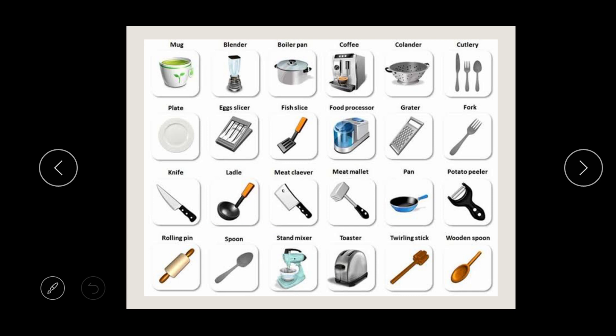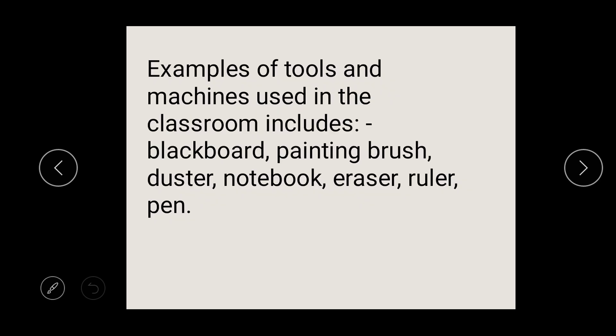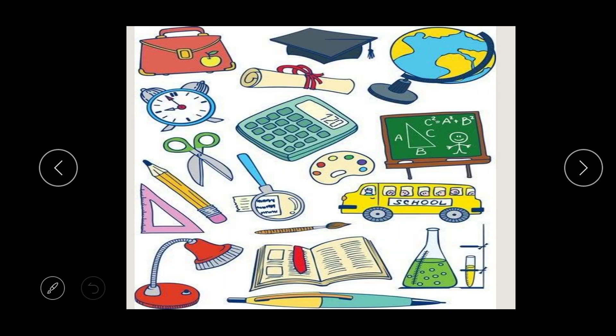Examples of tools and machines used in the classroom are the blackboard, painting brush, and duster. You can't just use a cloth to clean the board — a duster is the proper tool for cleaning the blackboard. The notebook, eraser, ruler, and pen are also tools you use in the classroom to make your work easier and faster.